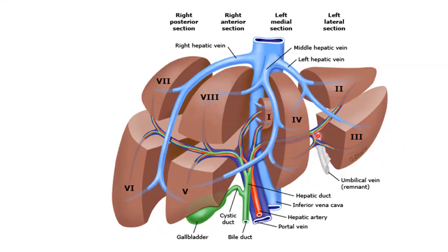Segments two and three are the farthest left, divided by the left hepatic vein from segment four. The left portal vein separates segment two above from segment three below. Segment four lies between the middle hepatic vein and the left hepatic vein, and is also divided by the left portal vein into segment four-A and segment four-B.